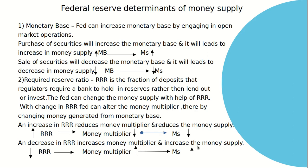Federal Reserve determinants of money supply. Number one is monetary base, also known as high powered money. The Fed can increase monetary base by engaging in open market operations. In open market operations, the Fed will purchase securities when they want to increase money supply — they purchase securities from the people and give money to the people, which increases the monetary base and money supply. When there is a sale of securities, the Fed will decrease the money supply due to a decrease in monetary base.